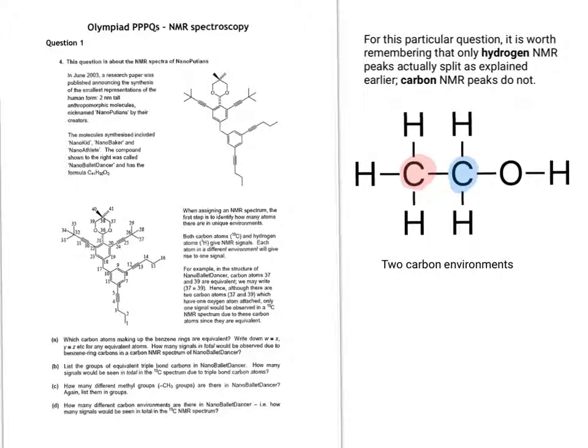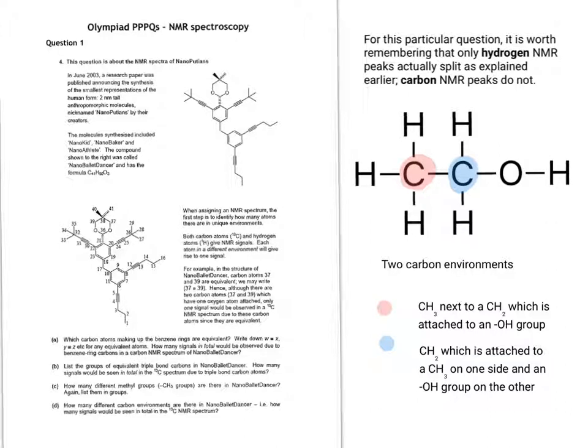Essentially, an NMR spectrum gives us the environments in which atoms of that particular element are found. Let's take a very simple organic molecule to illustrate what I mean by environments. Ethanol has two carbon environments. The blue highlighted carbon is part of a CH2 which is attached to a CH3 on one side and an OH group on the other. The red highlighted carbon is next to a CH2 group which is itself attached to an OH. So the two environments are slightly different from each other.